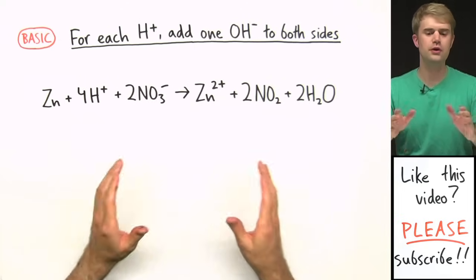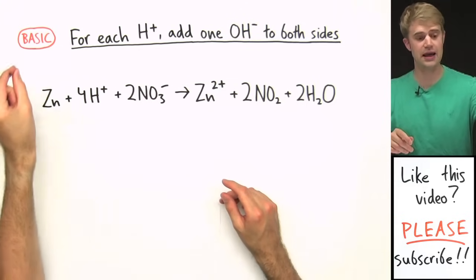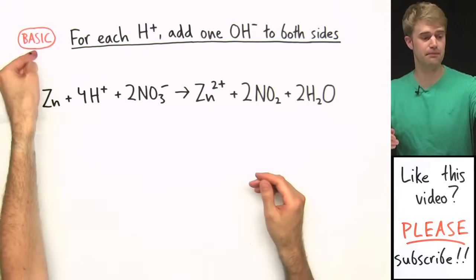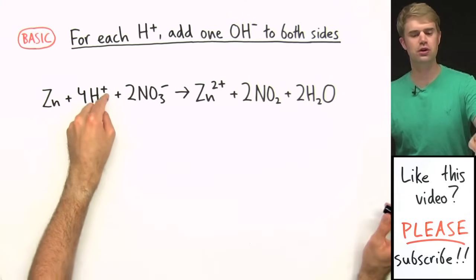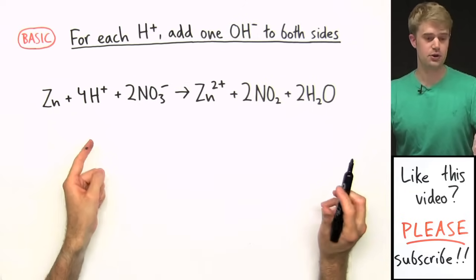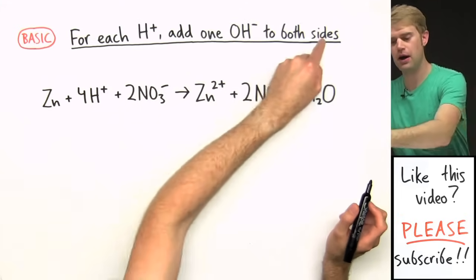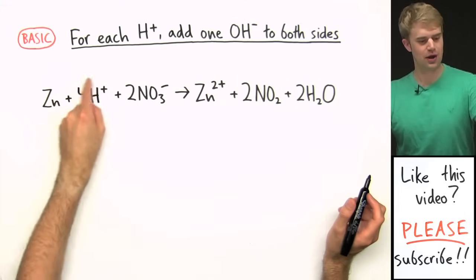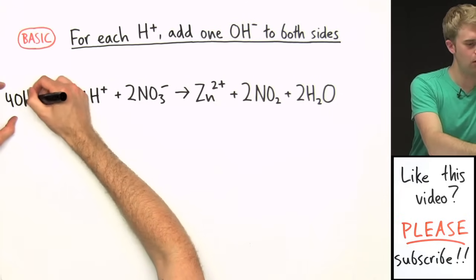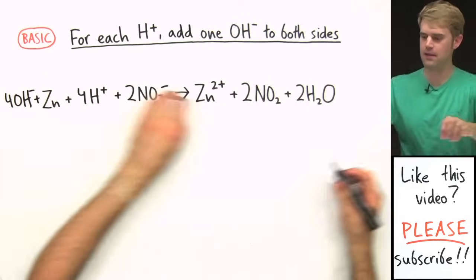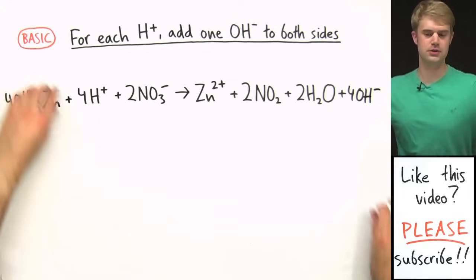Here's the first extra step used only for balancing in basic solution. We've got to get rid of the H⁺ because they make something acidic. To do this, for each H⁺ add one OH⁻ to both sides. I have four H⁺, so I add four OH⁻ to the left side and four OH⁻ to the right side.